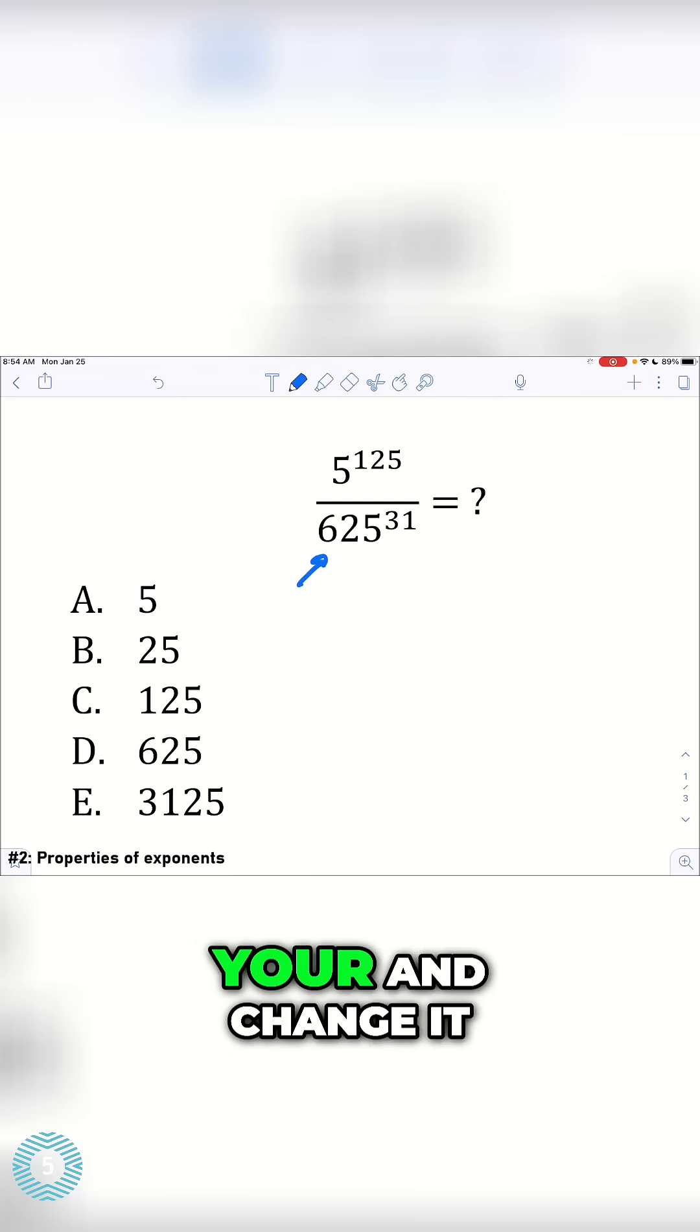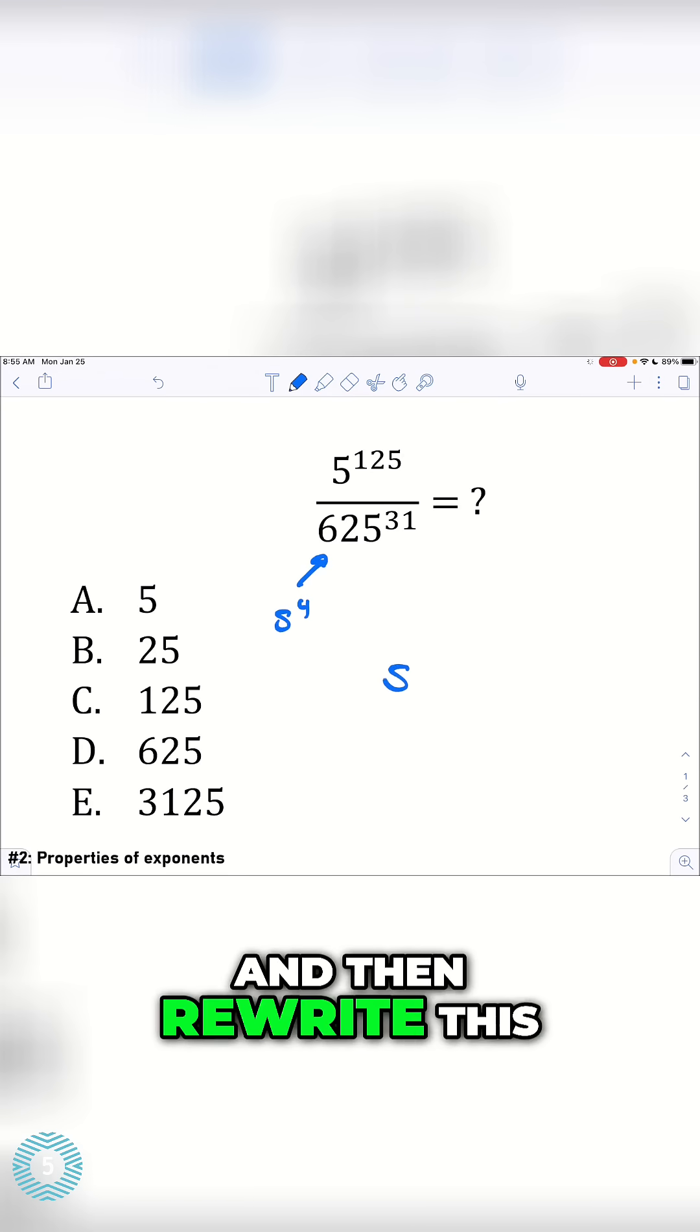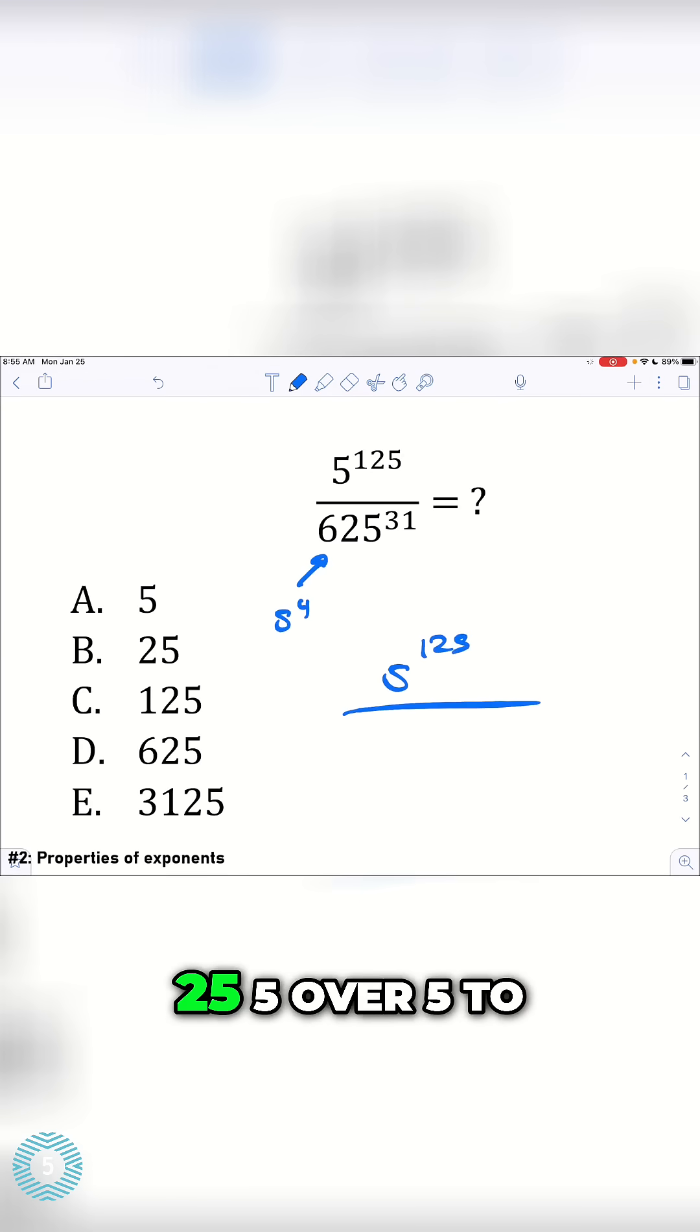The easiest thing to do is to take your 625 and change it to just 5 to the 4th, because 5 to the 4th is 625, and then rewrite this. 5 to the 125 over 5 to the 4 all to the 31.